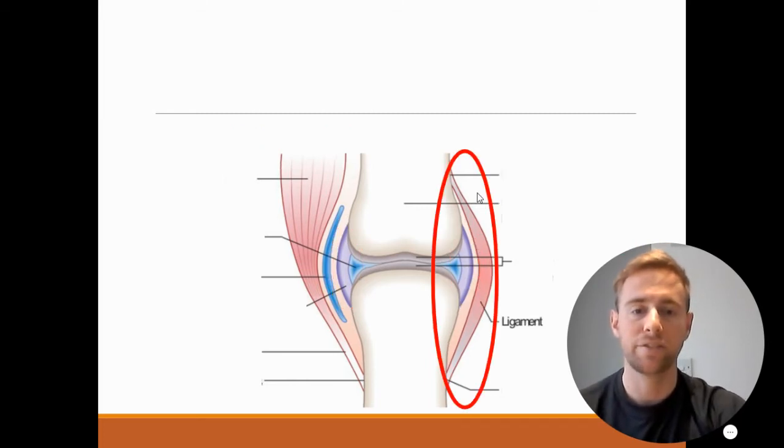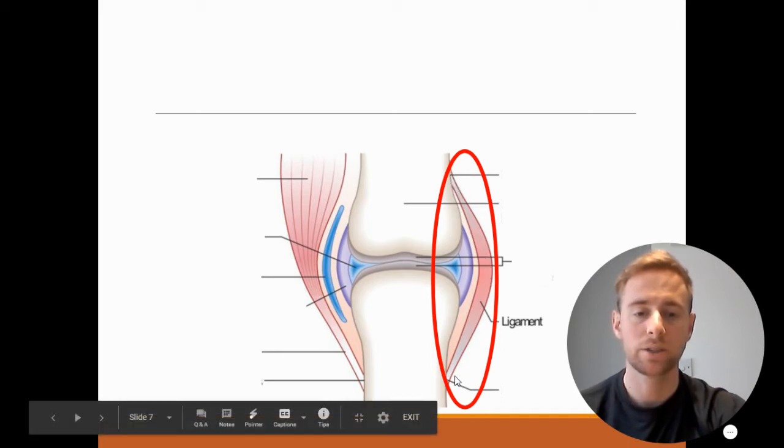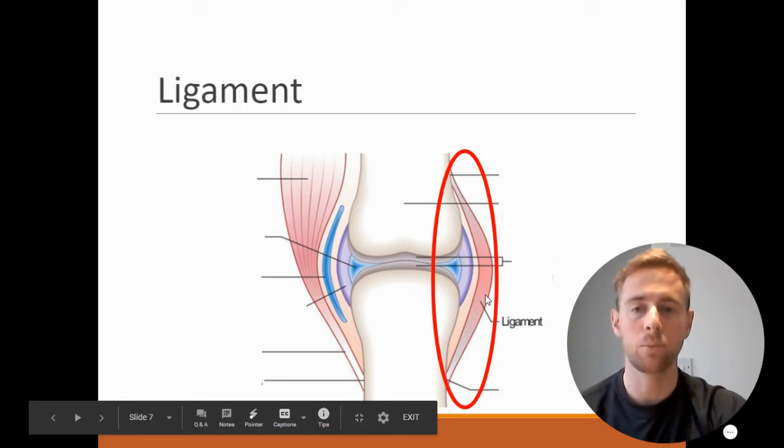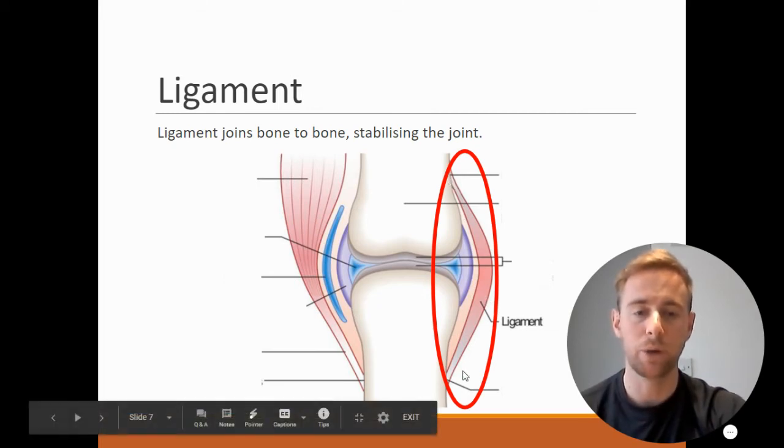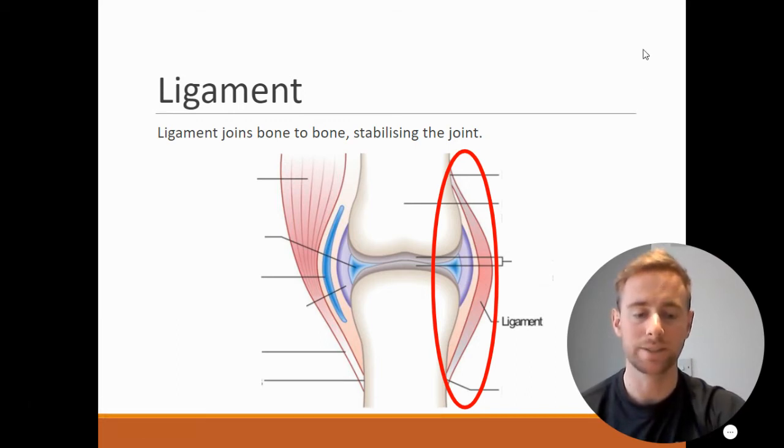Next we have this red attachment going from the femur all the way down to the tibia here. That is the ligament. And what ligaments do is they stabilize the joint and they join bone to bone. So they attach two bones together, stabilizing the joint to keep it nice and strong and steady.